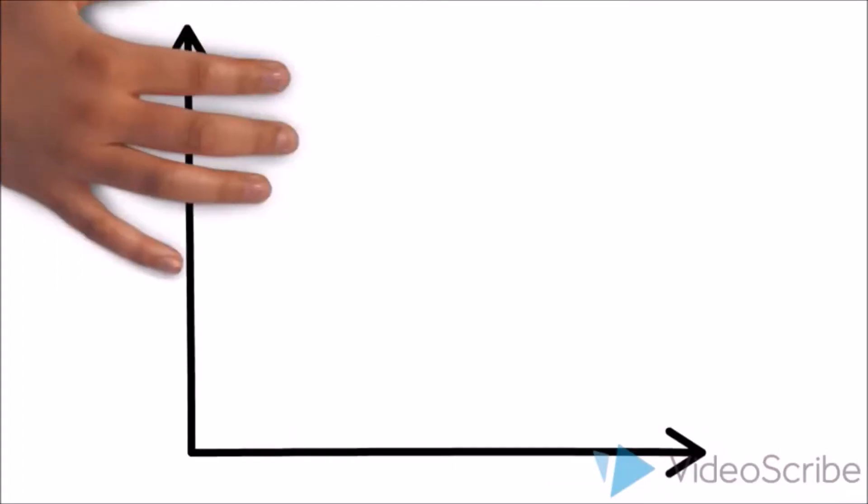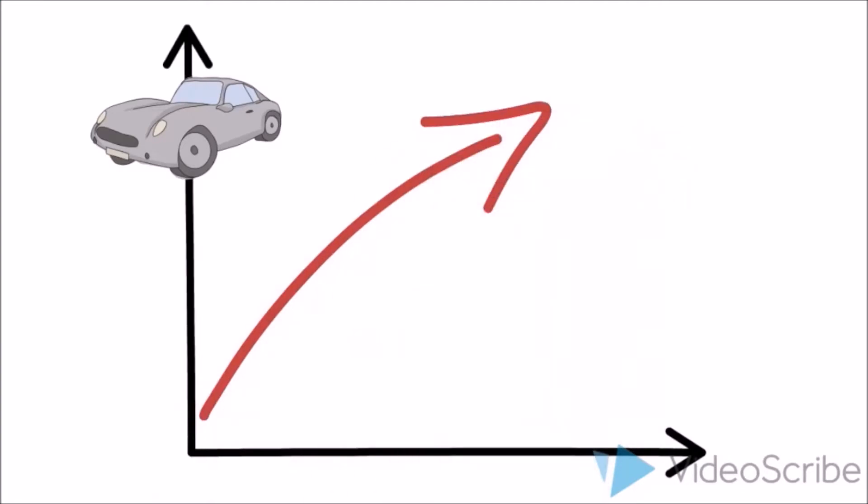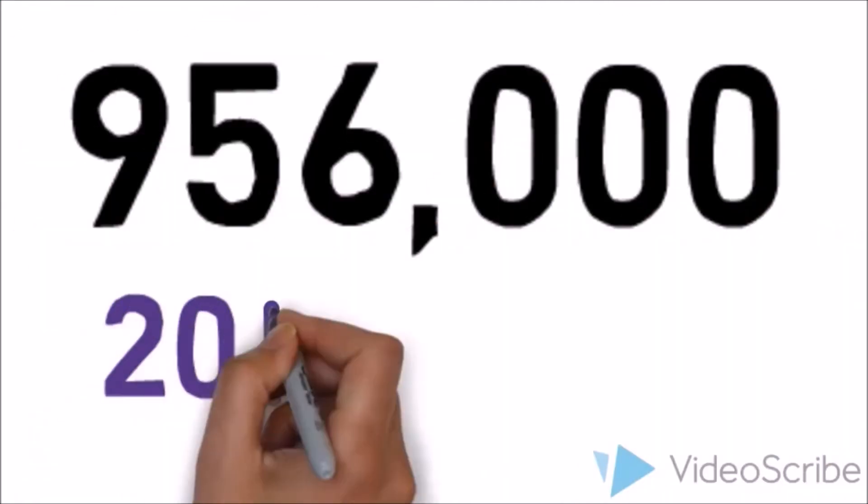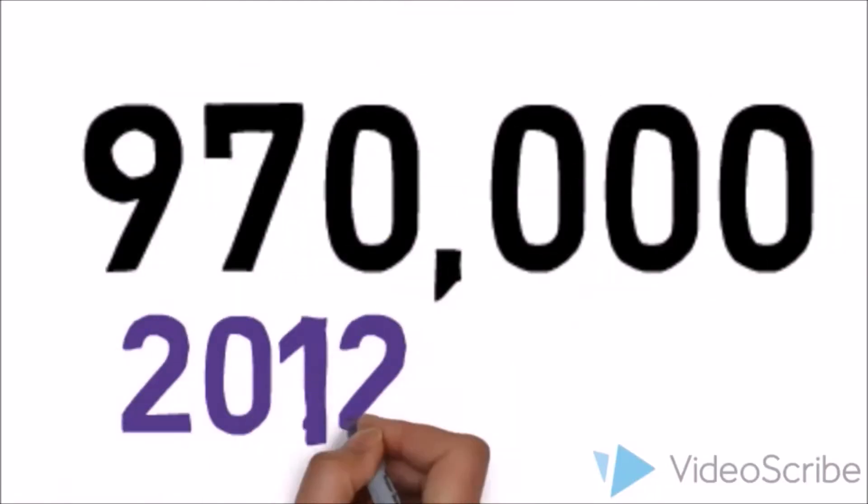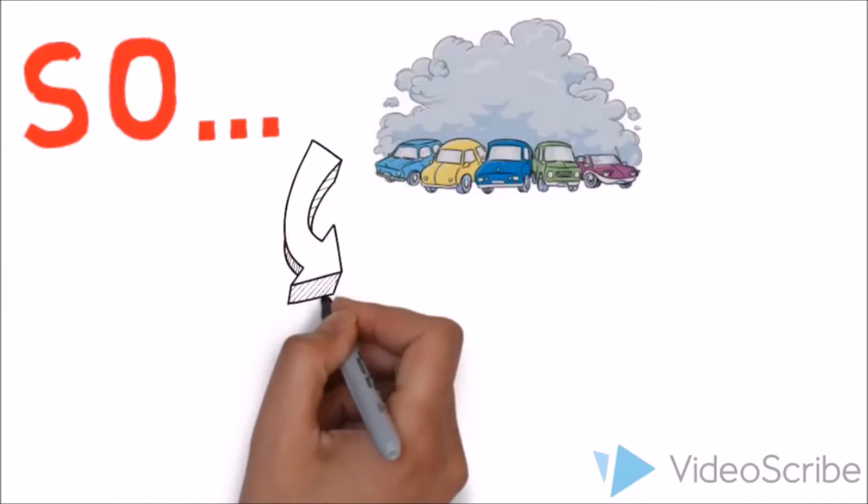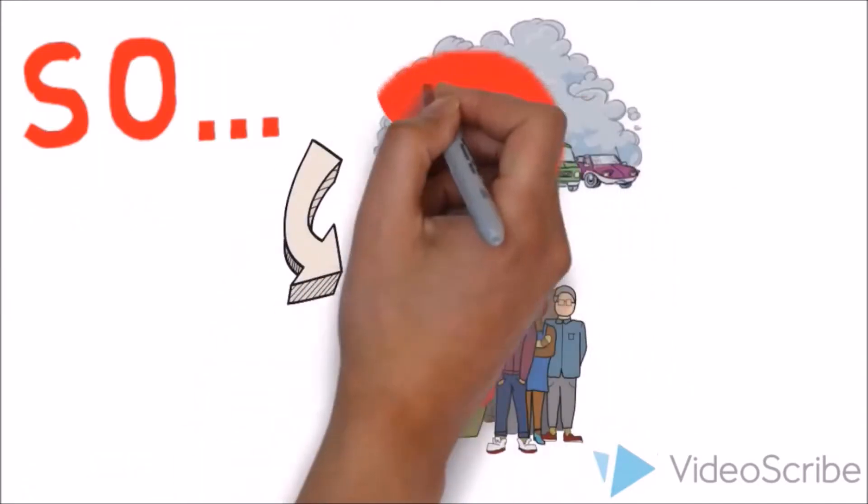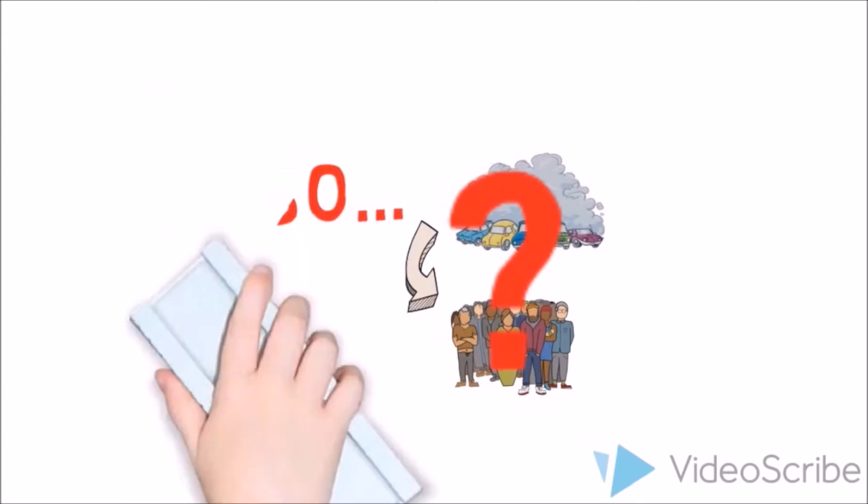On a general note, there has been a steady increase in motor vehicle population. It rose from 956,000 in 2011 to 970,000 in 2012. So, how does this increase in vehicle population and high consumption of energy affect us?